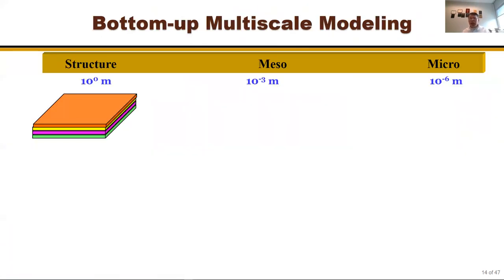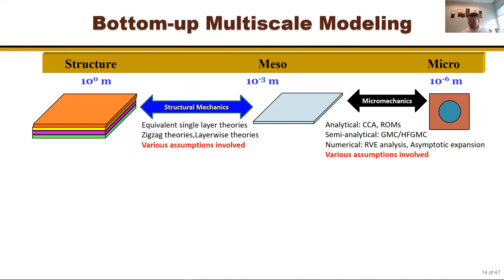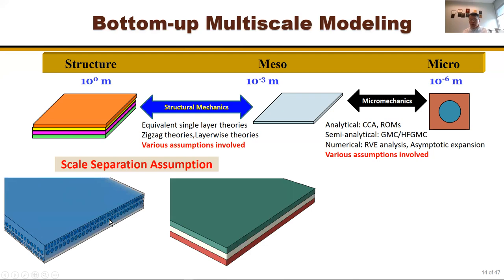The traditional way to handle this is multi-scale modeling: use the microstructure to perform micromechanics calculations, get so-called equivalent material properties, and then do structural analysis. Even this approach relies on the fundamental scale separation assumption — for example, for a fiber-reinforced panel, you calculate effective properties, replace the original panel with a homogeneous one, but create artificial discontinuity at the layer interface.